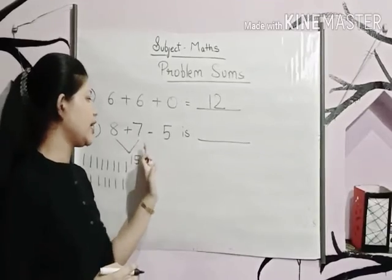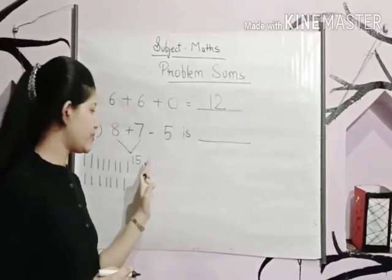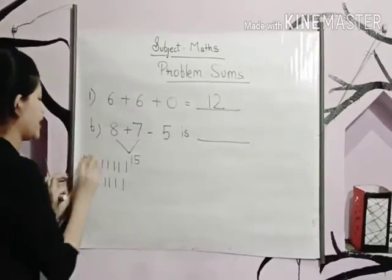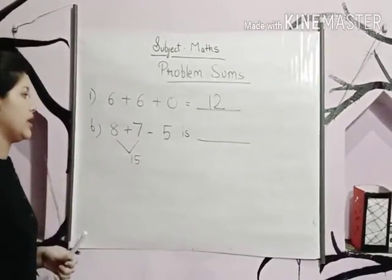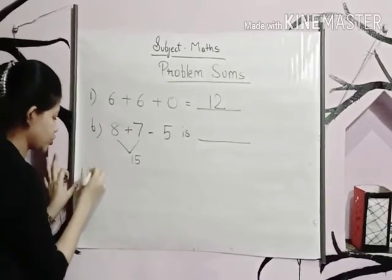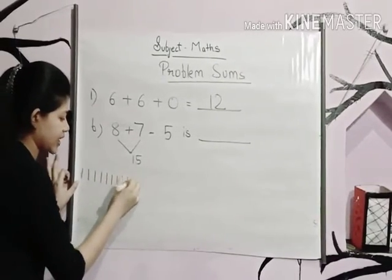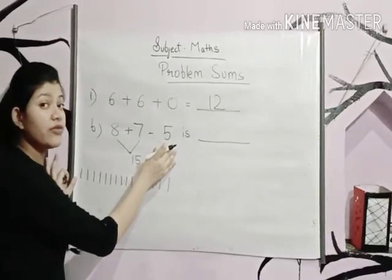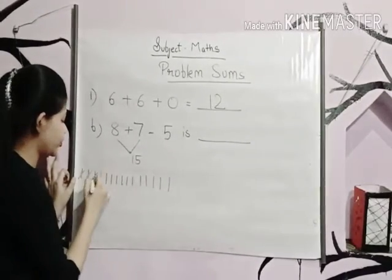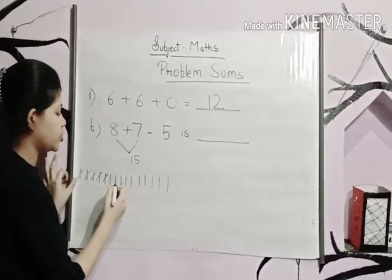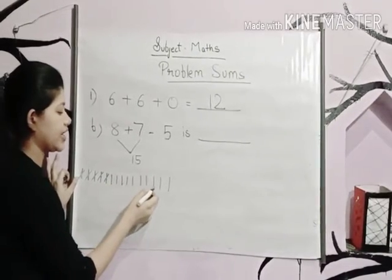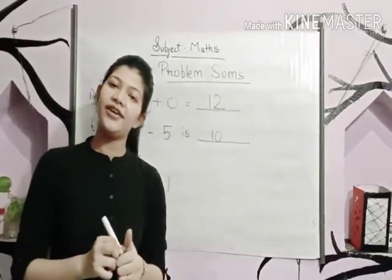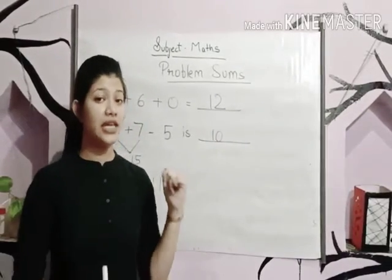Now fifteen minus five. We draw fifteen lines and subtract five, leaving ten. So the answer to eight plus seven minus five is ten. I hope this is clear to you all.